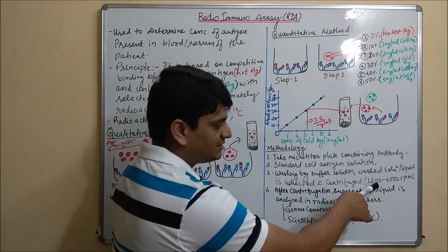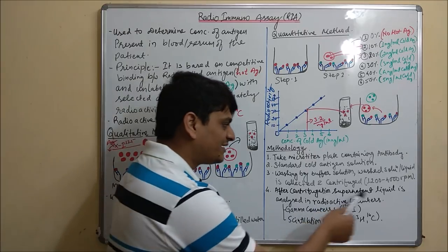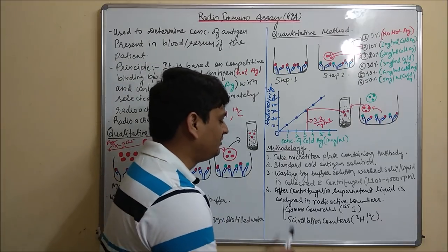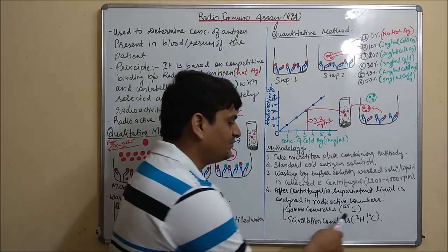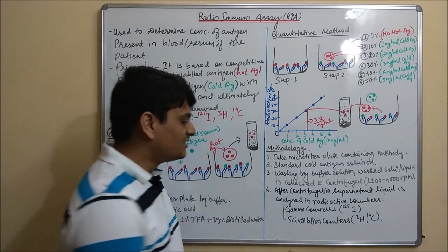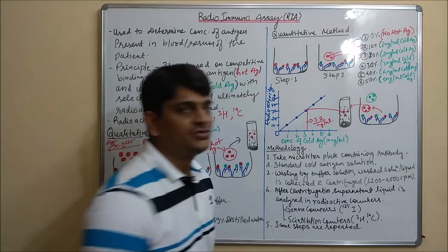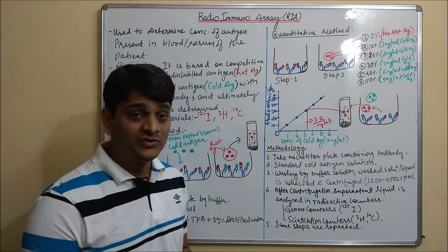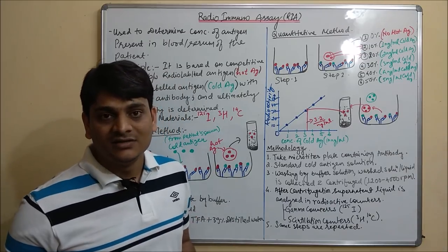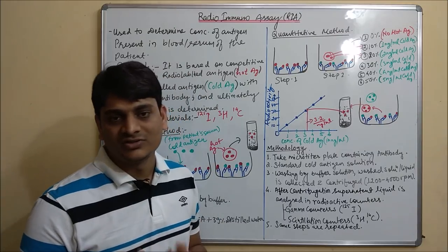Centrifugation is done at 1200 to 4000 revolutions per minute. After centrifugation, the supernatant liquid is analyzed under radioactive counters. Two counters are mainly used: a gamma counter, if iodine-125 is used, and a scintillation counter, if tritium (H-3) or carbon-14 is used. Radioimmunoassay is used to determine hormones, antigens, many drugs, and allergens. When RIA is used to determine allergens, it is known as RAST — radioallergosorbent assay.